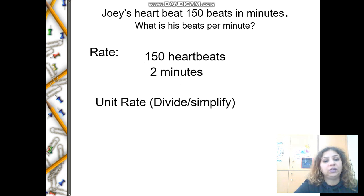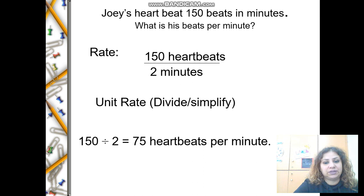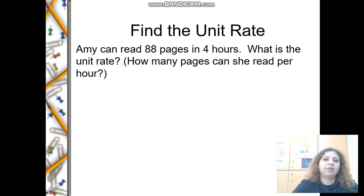I'm going to divide numerator and denominator by two, so you will get 75 per unit. Find the unit rate: Amy can read 88 pages in four hours. What is the unit rate? How many pages can she read per hour? That means I need to change the four hours to one hour. The first step is to write the numbers as a fraction or ratio, 88 over 4.